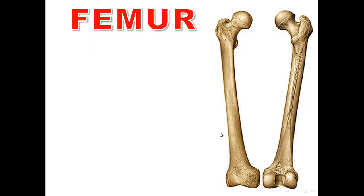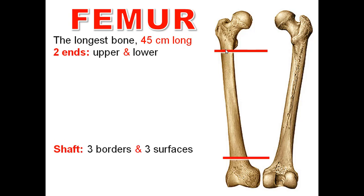Start by the gross features. The femur is a long bone. It is the skeleton of the thigh. It is the longest bone, about 45 centimeters long. Being a long bone, it is formed of two ends and a shaft: upper end and lower end.